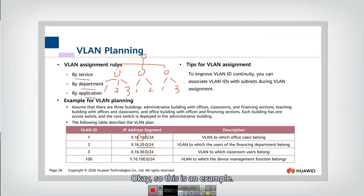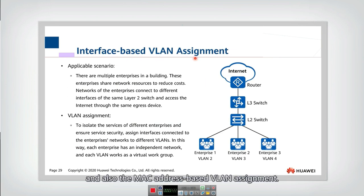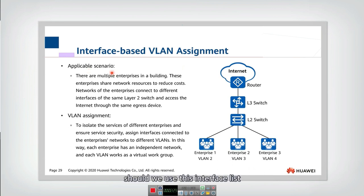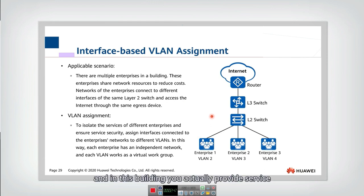We have learned two kinds of VLAN assignments: interface-based VLAN assignment and MAC address-based VLAN assignment. Now let's look at which application scenario calls for each method. First, let's consider the interface-based approach. Assume you are the administrator of a building, and in this building you provide service for three different enterprises.